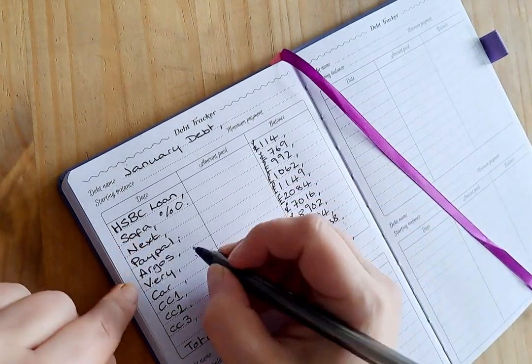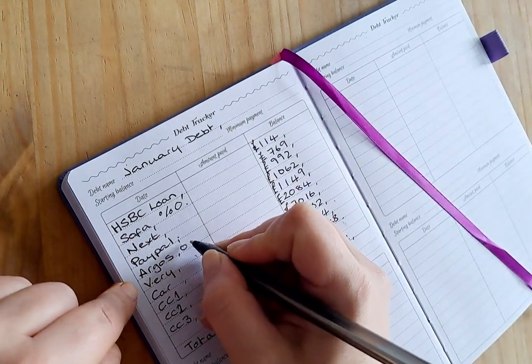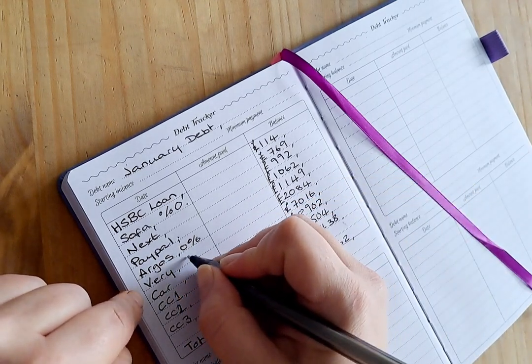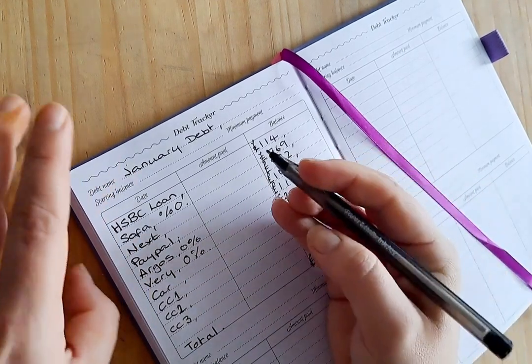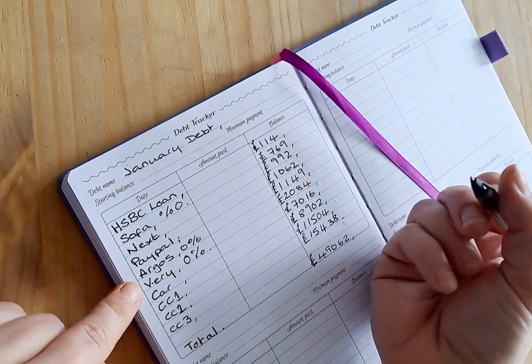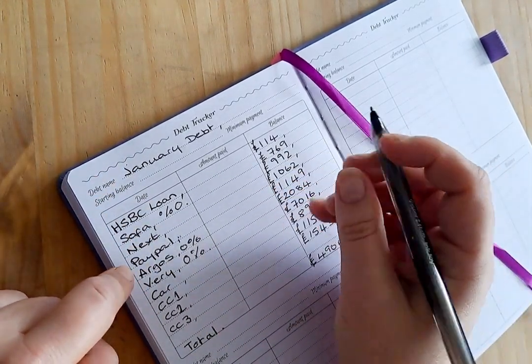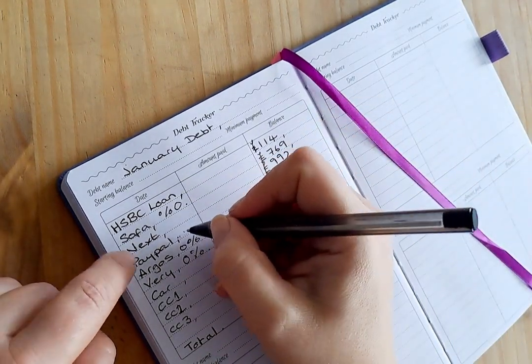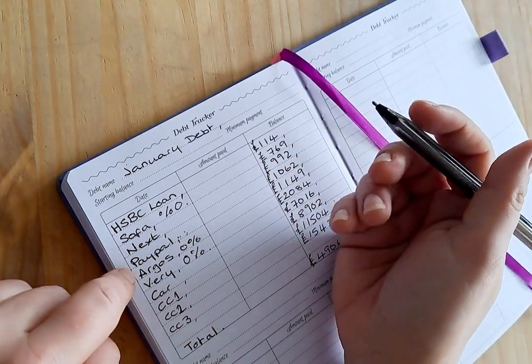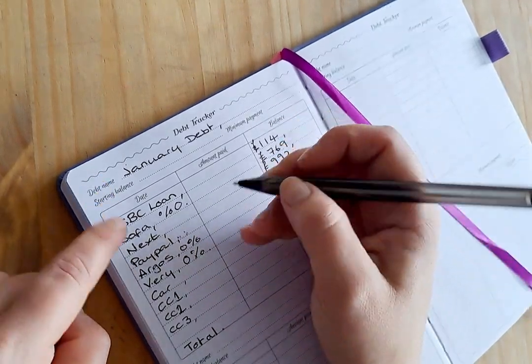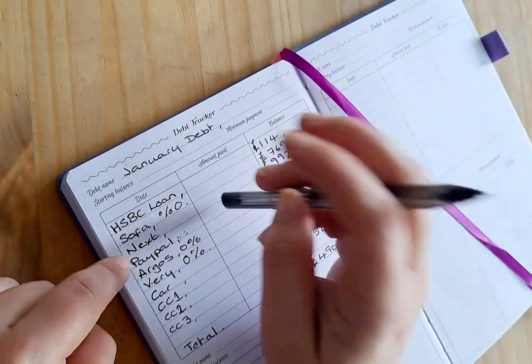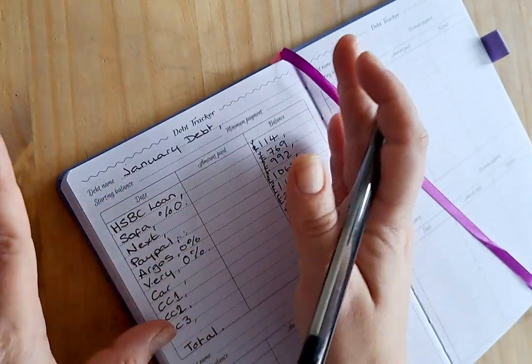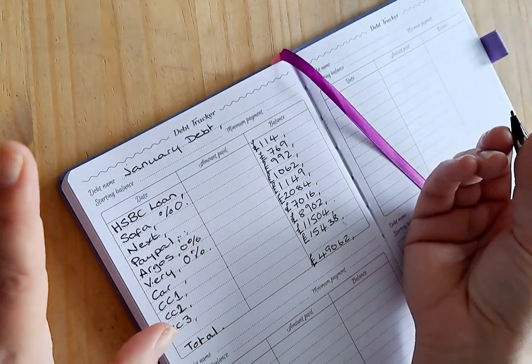So this one is 0%, Argos is 0% as long as it's paid off before the buy now pay latest finish, this one is 0% as long as it's paid off before the buy now pay latest. I believe my PayPal was around I want to say 21%. Next is at 23.9% I believe and just about to go up so I want to get this one clear as quickly as possible.